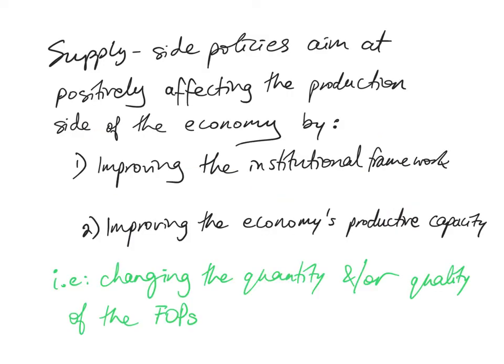Supply-side policies are policies that aim at positively affecting the production side of the economy by either improving the institutional framework or improving the economy's productive capacity. This means changing the quantity and/or quality of the factors of production.